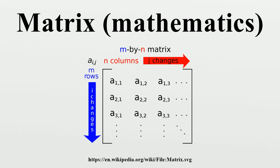A square matrix A is called invertible or non-singular if there exists a matrix B such that AB equals BA equals I_n. If B exists, it is unique and is called the inverse matrix of A, denoted A^{-1}.